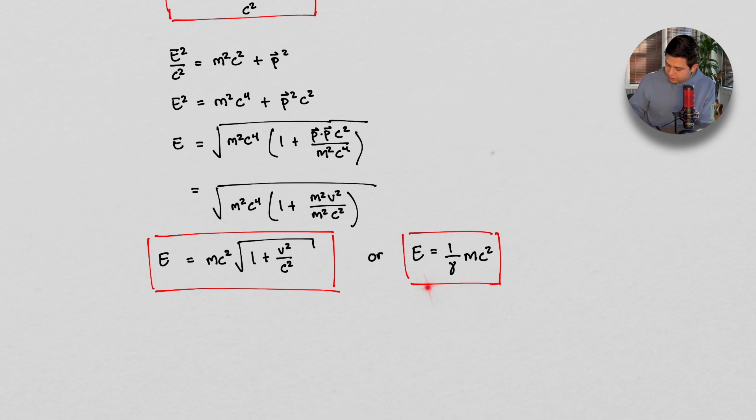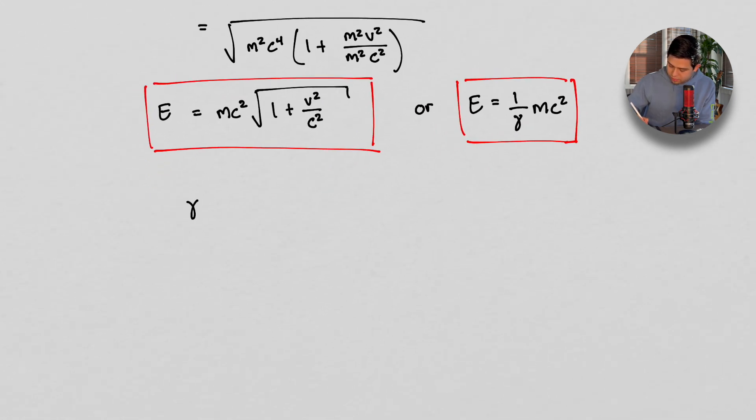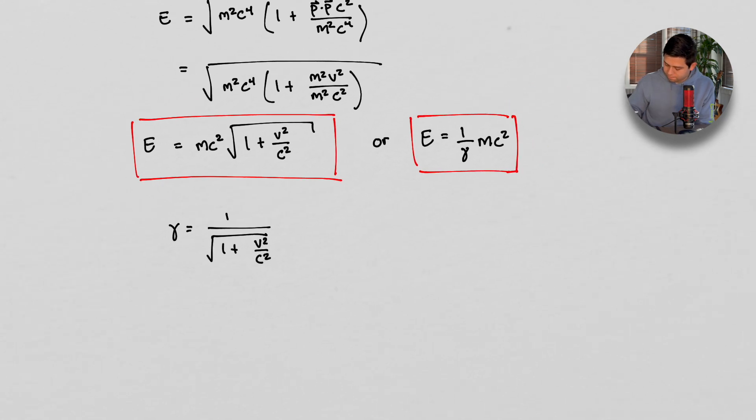And then we can get to this point here where we factor out this guy. And we take the square root of this, which is just MC squared. And we cancel out M's in here and we get this. So when the particle is moving, we get this. Or we can write it in this way where gamma equals 1 over 1 plus V squared over C squared. And so our energy looks something like this.